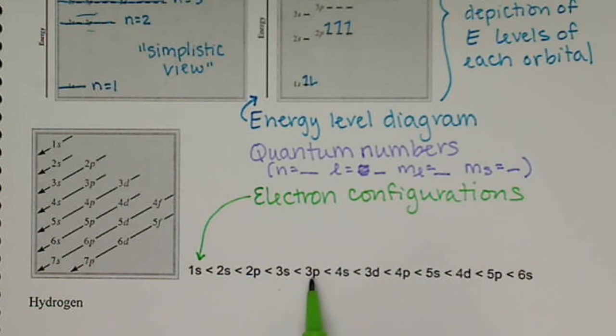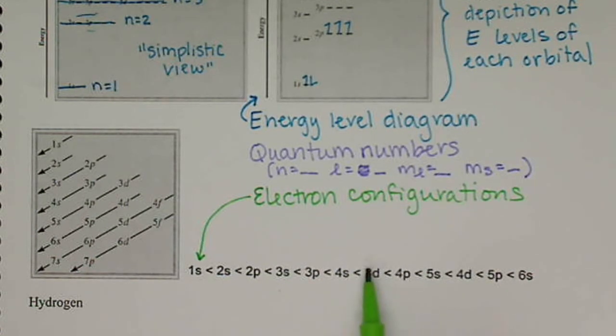Remember this is where it kind of flip-flops. We get the 4s is lower in energy than the 3d, even though we have a lower quantum number here. The high energy of this d orbital puts it higher than the 4s.